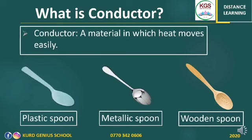The second one is: what is a conductor? A conductor is a material in which heat moves easily. As you can see, we have three different kinds of spoons: a plastic spoon, a metallic spoon, and a wooden spoon. If you put these spoons inside a pan on the fire, you can feel that the metallic spoon is the only one which can transfer heat to your hands. The plastic spoon and the wooden spoon cannot transfer heat. That's why the metallic spoon is the conductor.